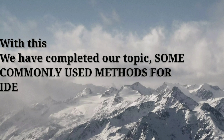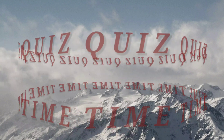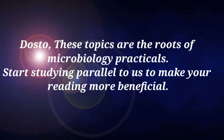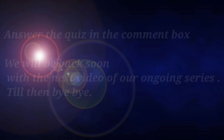With this we have completed our topic on commonly used methods for identification of bacterial culture. Now it's quiz time: Why is gram staining used? What is the principle of gram staining? Give some examples of gram positive bacteria. What is the purpose of hanging drop preparation? Name some motile bacterial species. Answer the quiz in the comment box. We will be back soon with the next video of our ongoing series. Till then, bye!